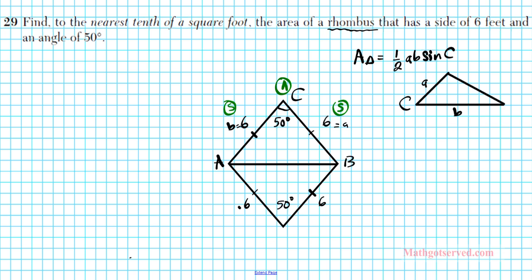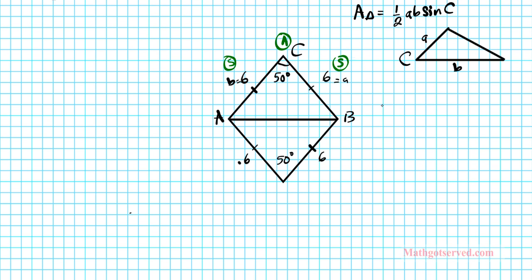You notice that this rhombus is made up of two congruent triangles. So the area of our rhombus is equal to twice the area of the triangle because they're congruent. So instead of 1/2 AB sin C, we're going to double: two times 1/2 AB sin C. The first 1/2 AB sin C is for the top, the second one for the bottom. You double it, that's the sum of the two areas. In this triangle, A is 6, B is 6, it's an isosceles triangle. Big C is 50 degrees. So we're going to have two times 1/2 times 6 times 6 sine 50.